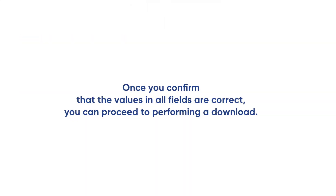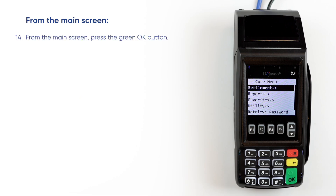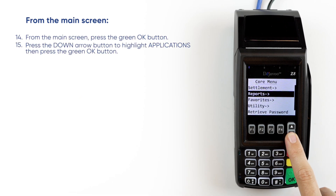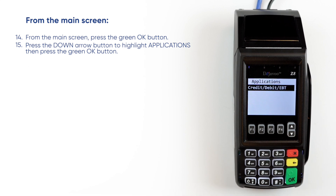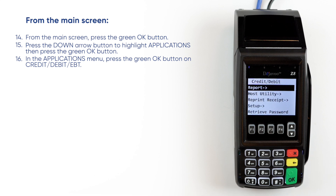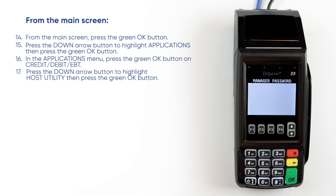Once you confirm that the values in all fields are correct, you can proceed to performing a download. From the main screen, press the green OK button. Press the down arrow button to highlight Applications, then press the green OK button. In the Applications menu, press the green OK button on Credit, Debit, EBT. Press the down arrow button to highlight Host Utility, then press the green OK button.